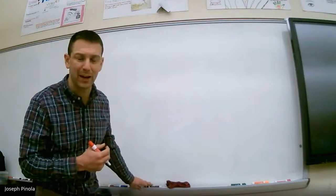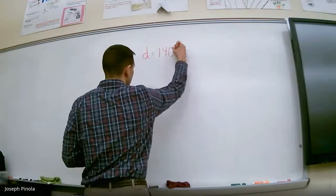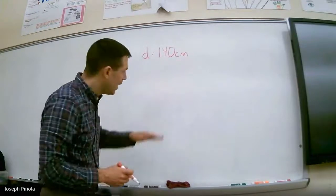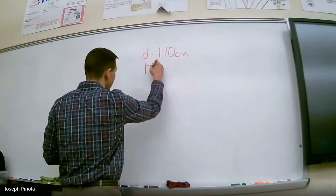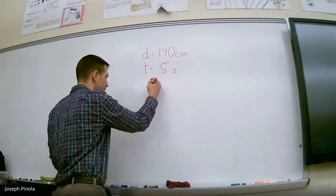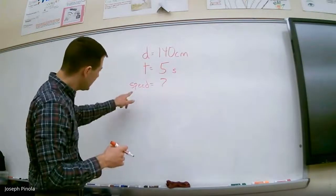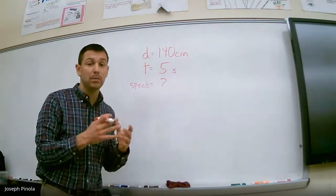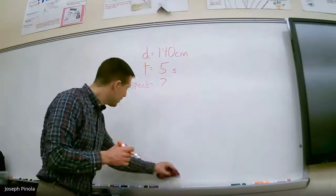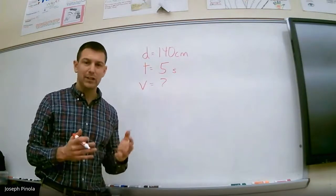Welcome to the whiteboard where we'll do our calculation. For the red train, we knew that it traveled a distance of 140 centimeters in a time of five seconds. Scientists don't typically write out the word 'speed.' Instead, they use a symbol — the letter V — to represent speed. That symbol may be familiar because we used it when talking about waves. We use the letter V to represent the speed of a wave, and we're going to use that same letter to find the speed of an object.